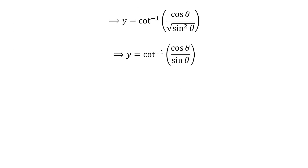We know that 1 minus the square of cosine of theta is equal to the square of sine of theta, and the square root of sine squared of theta is equal to sine of theta. So y is equal to the inverse cotangent of cosine of theta upon sine of theta.